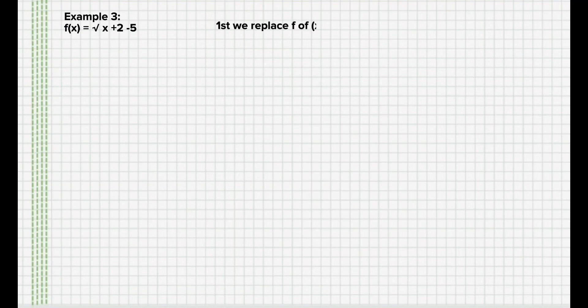Let's find the inverse of the function f(x) = √(x + 2) - 5 by using the same process. We replace f(x) with y. So, y = √(x + 2) - 5.